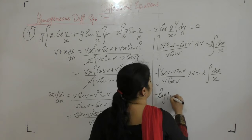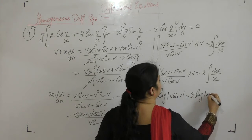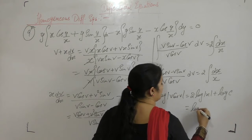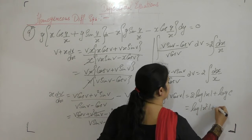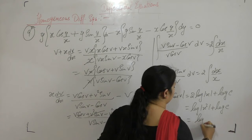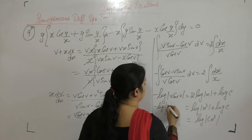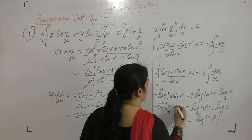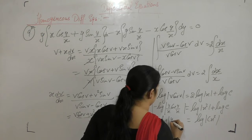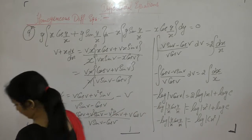This gives log of v cos v equals 2 log of x plus constant, which we write as log of x squared plus log c. Using log a plus log b equals log ab, and substituting v equals y upon x: log of y upon x times cos(y/x) equals log of cx squared.